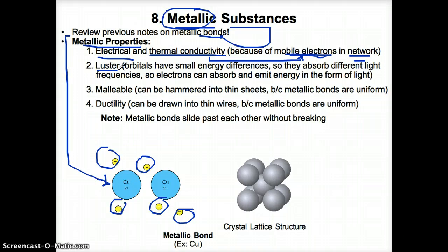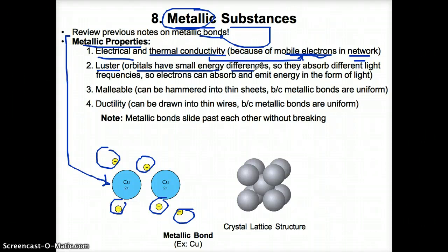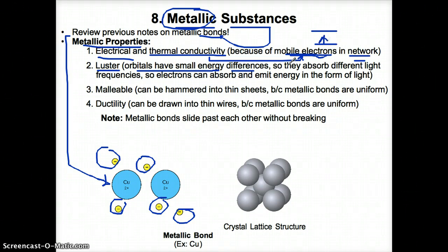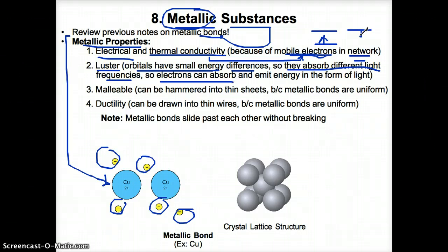Next, metals are lustrous or shiny. They're shiny because the orbitals within metallic substances have small energy differences, so what the metals only have to do is absorb small amounts of light energy with different frequencies, so that the electrons can absorb a specific amount of energy, and when they emit it, they emit specific amounts of energy in the form of light that comes off as shine or lustre.